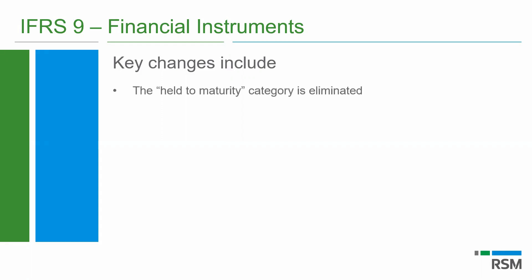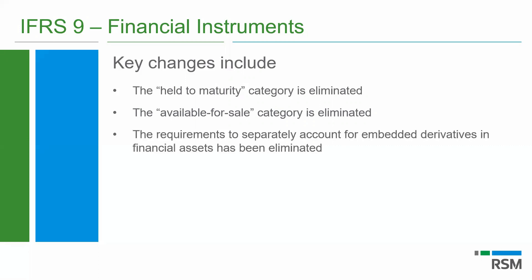Some key changes: the held-to-maturity category has gone away — that doesn't exist anymore. The available-for-sale category has gone. Another nice change is that previously under IAS 39, we were required to separate embedded derivatives within a financial asset and account for them separately. That has gone. So now we account for an embedded derivative in a financial asset as part of that financial asset — we are not required to separate that out.